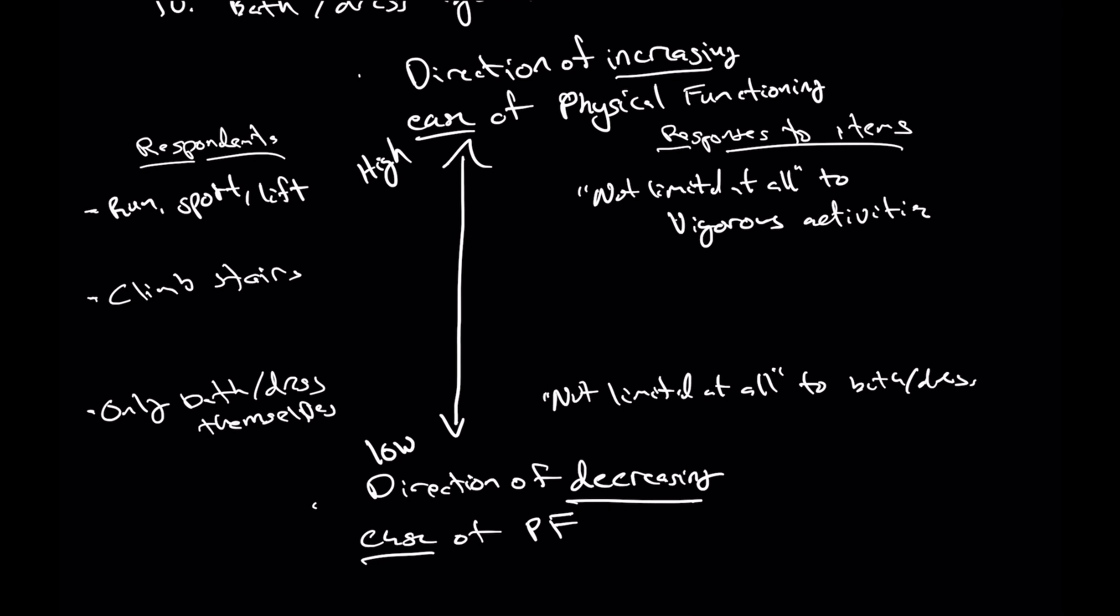One of the nice things we can do is we can pick any point along our continuum, say right above climbing stairs, so this is where some individual X is on our scale. We can think about what is the likelihood of them responding to being not limited at all to be able to bathe and dress themselves. We would say they're very likely. However, if you can only really climb yourself, so you're at this level, well they're less likely to be able to say that they're not limited to any of the vigorous activities.